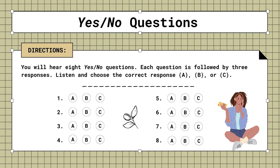8. Were you waiting for me? A. The waiter's over there. B. I've been here half an hour. C. Yes, let's wait here.